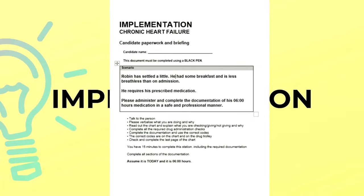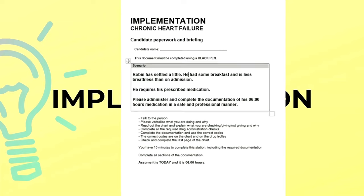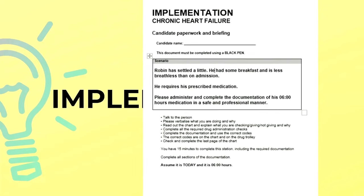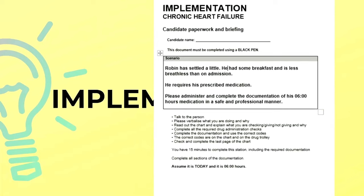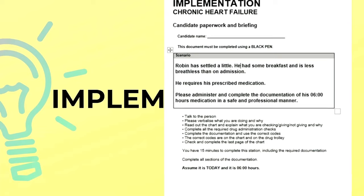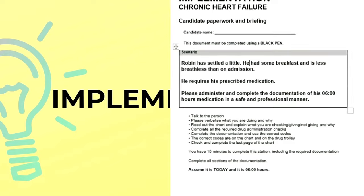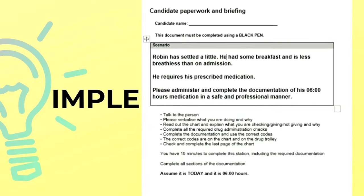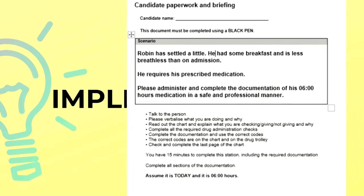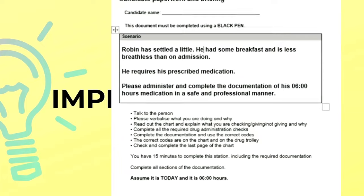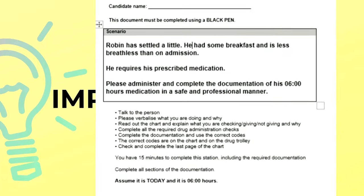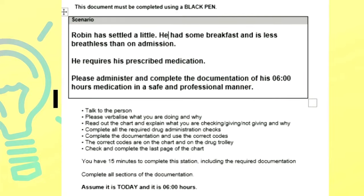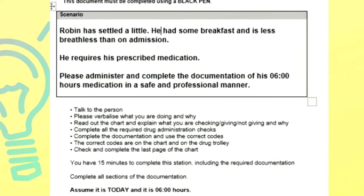Robin has settled a little. He had some breakfast and is less breathless than on admission. He requires his prescribed medication. Please administer and complete the documentation of his 6-hour medication in a safe and professional manner. Talk to the person. Verbalize what you are doing and why. Read out all the chart and explain what you are checking, giving, not giving, and why. Complete all required drug administration checks. Complete the documentation and use the correct codes — the correct codes are on the chart and on the drug trolley. Check and complete the last page of the chart. You have 15 minutes to complete the station, including the required documentation.